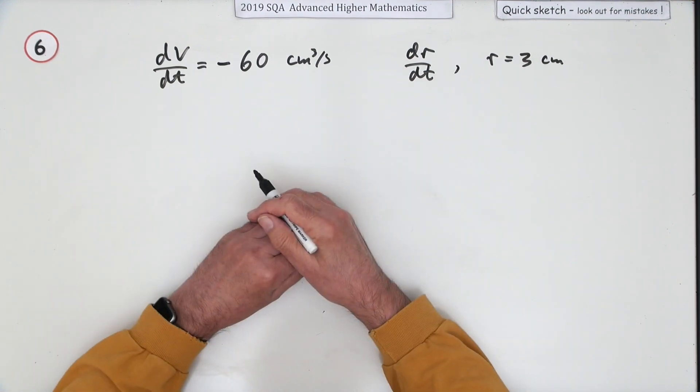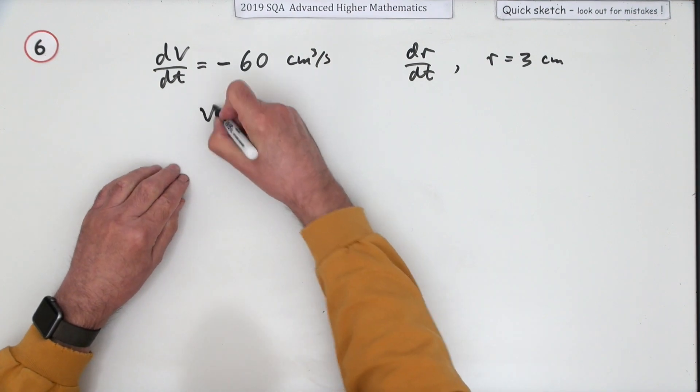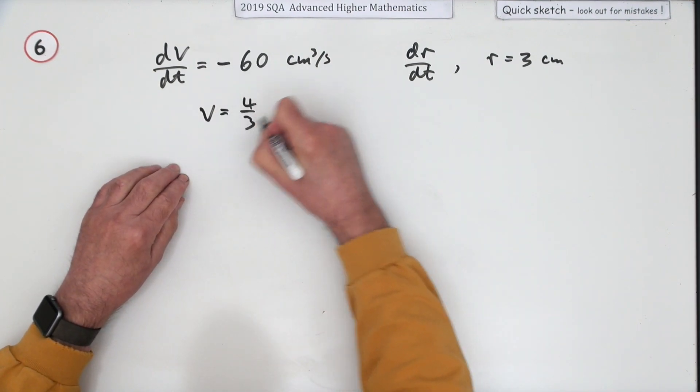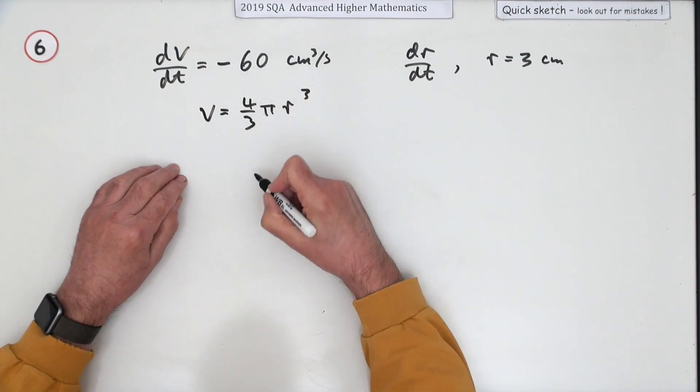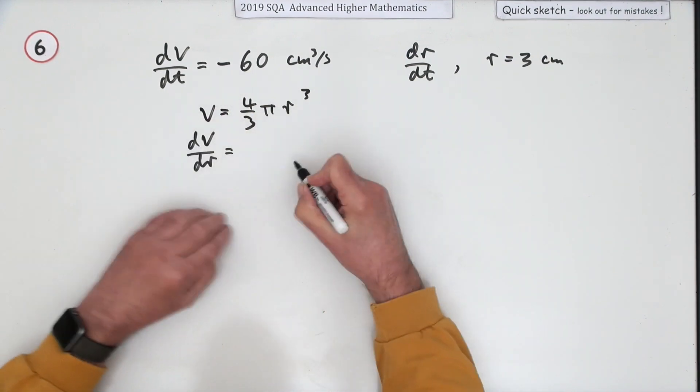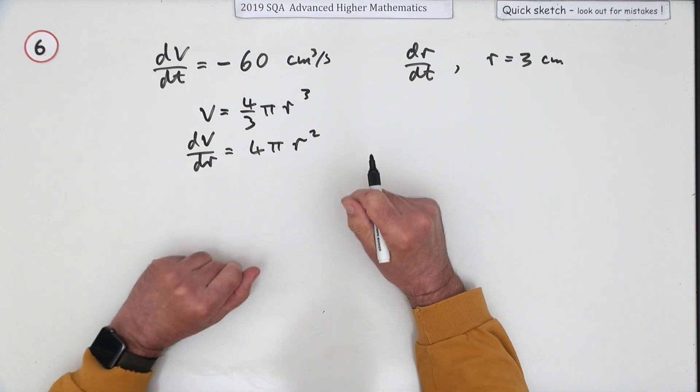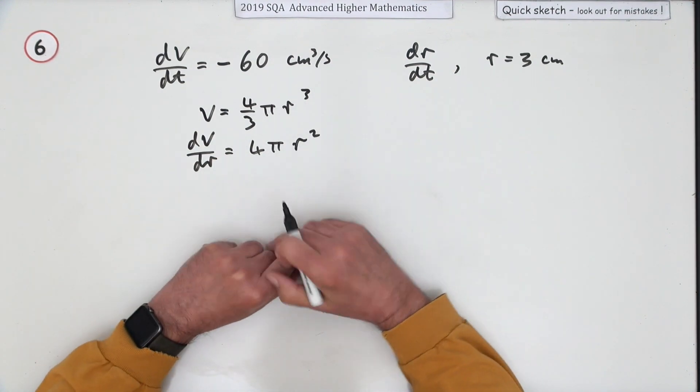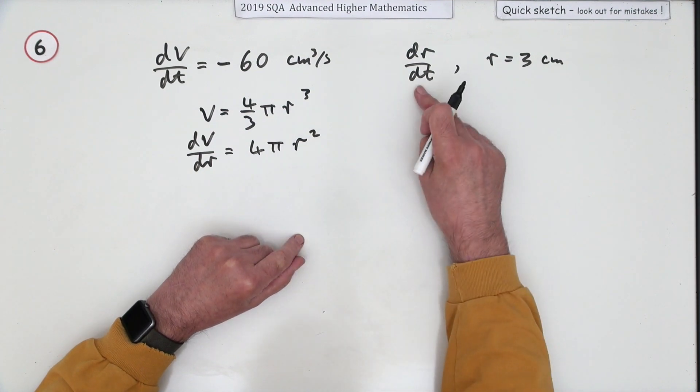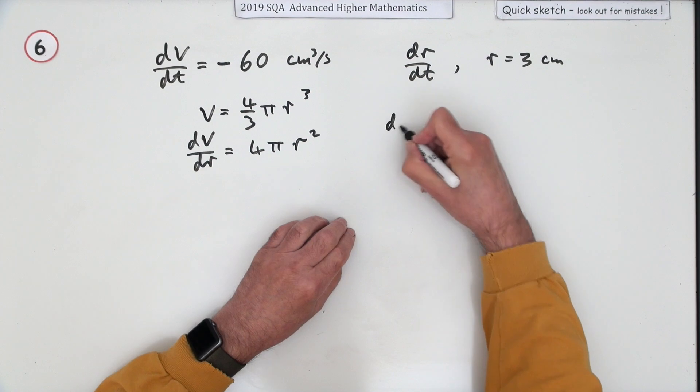Well, you want dr/dt. You've got a connection between V and r: V = 4/3πr³. So what you can find from that is dV/dr = 4πr². Notice that's the formula for the surface area of the sphere.